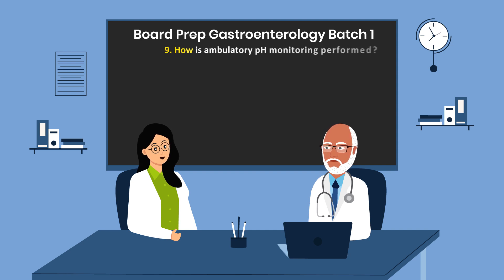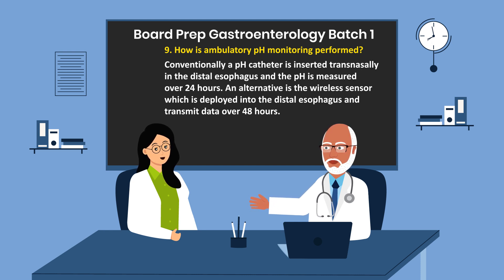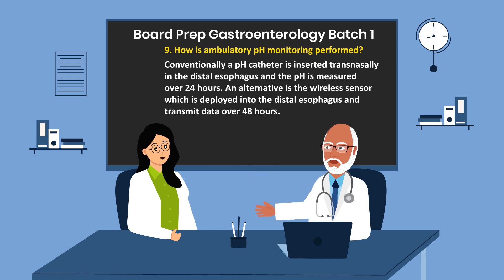Question 9. How is ambulatory pH monitoring performed? Conventionally, a pH catheter is inserted transnasally into the distal esophagus and the pH is measured over 24 hours. An alternative is the wireless sensor, which is deployed into the distal esophagus and transmits data over 48 hours.